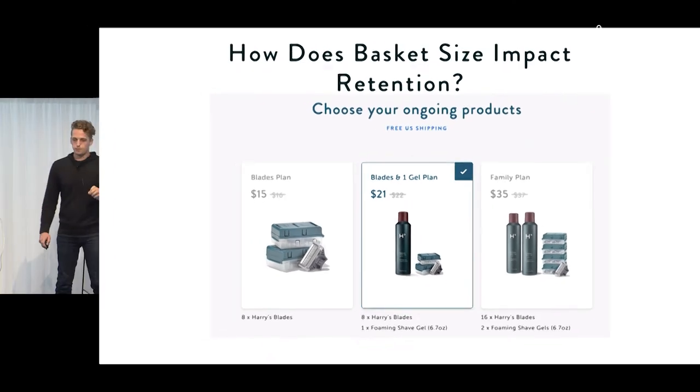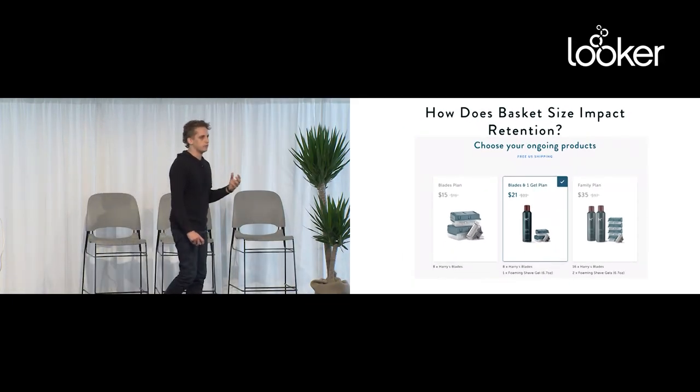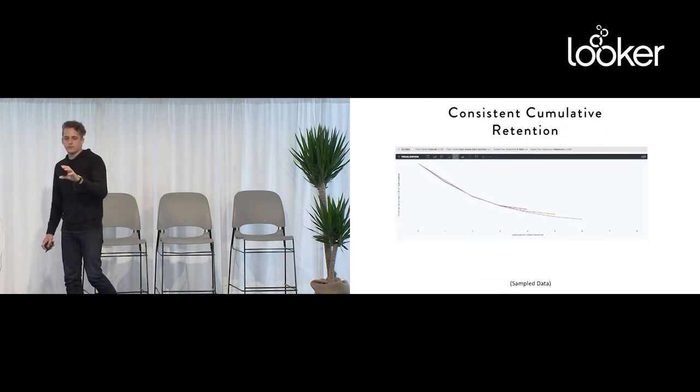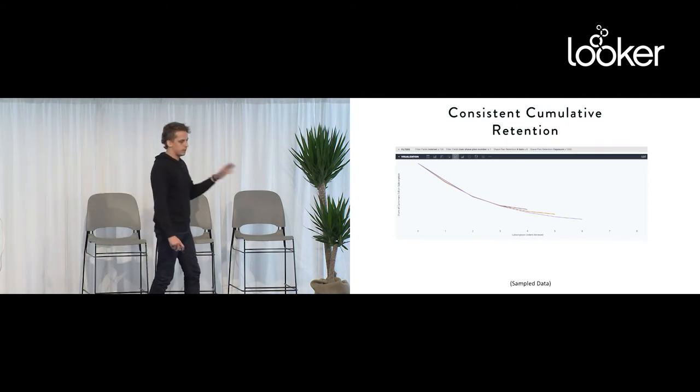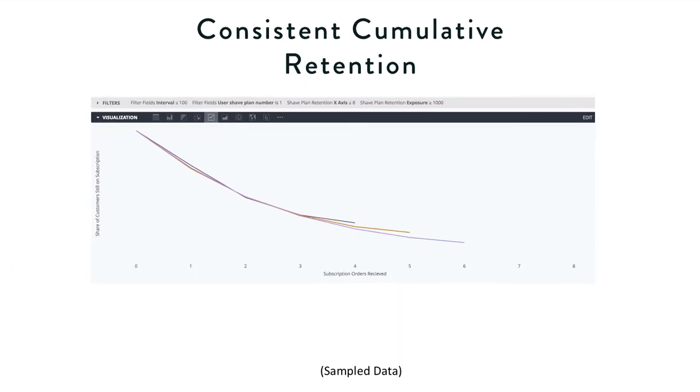So, bringing it all home. How does basket size impact retention? How does the choice of what we default people into for these subscriptions impact how long they stay with us as customers? We built this into Looker. We're doing Kaplan-Meier all the time here in Looker. Here's the visualization. I sort of obfuscated the y-axis and truncated it, so the data are a little bit hard to interpret, but we should be able to see the patterns here. This is grouped by quarter of start, I think, from 2015. We've got three quarters.